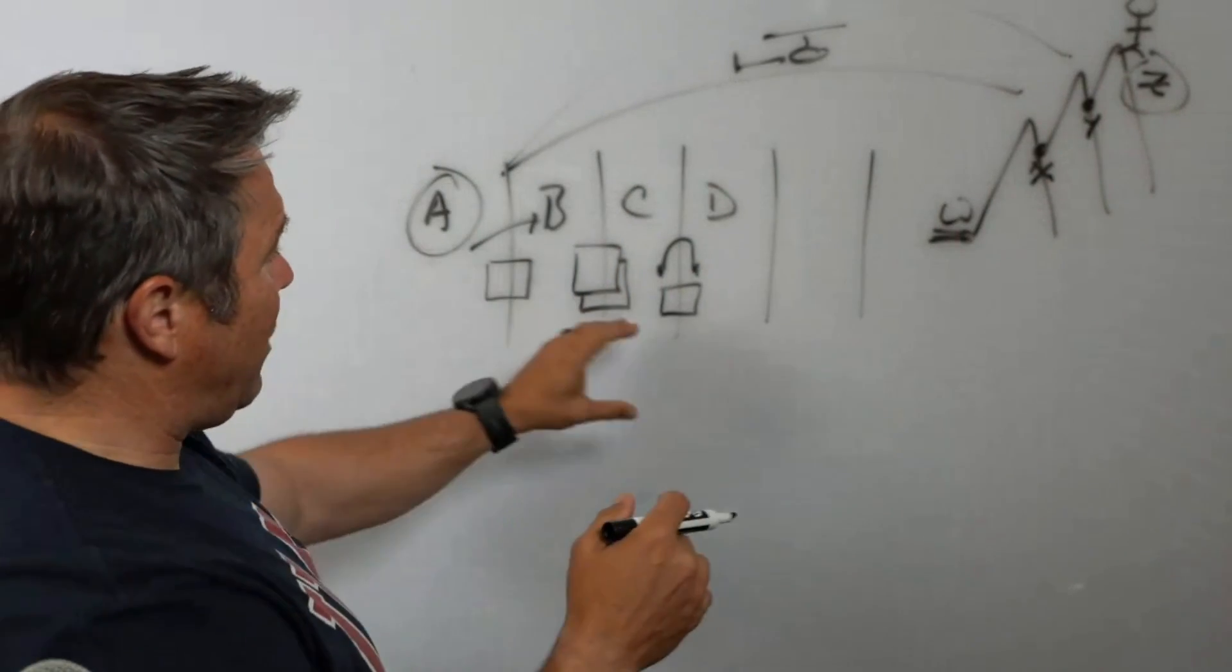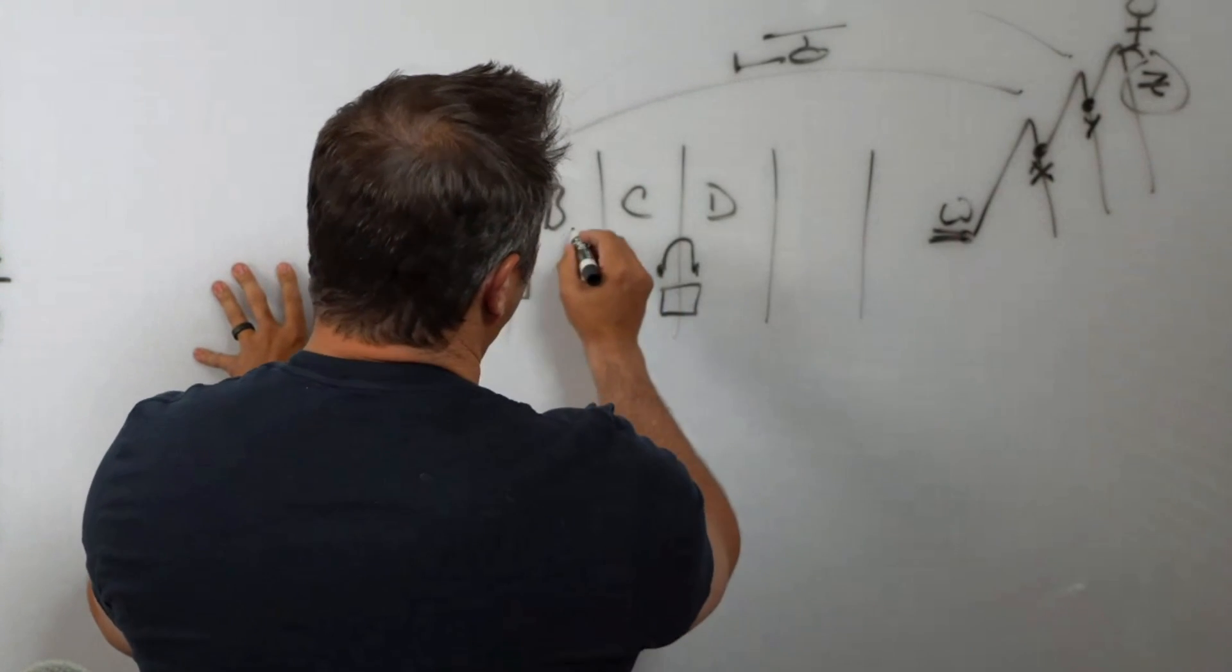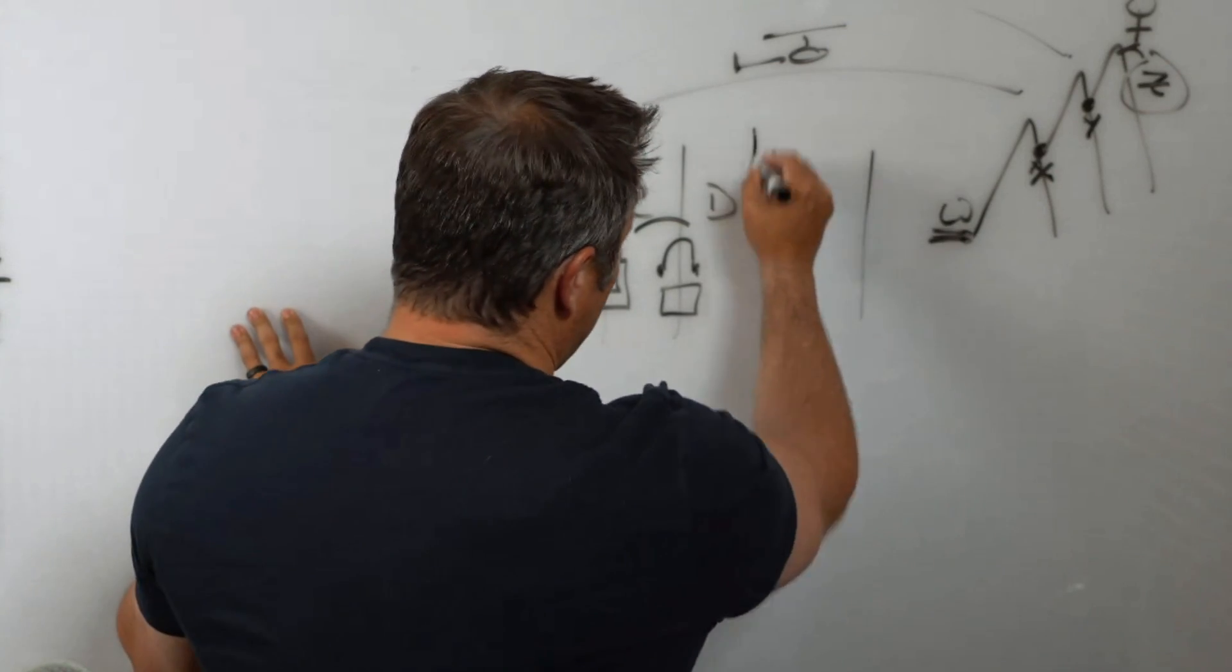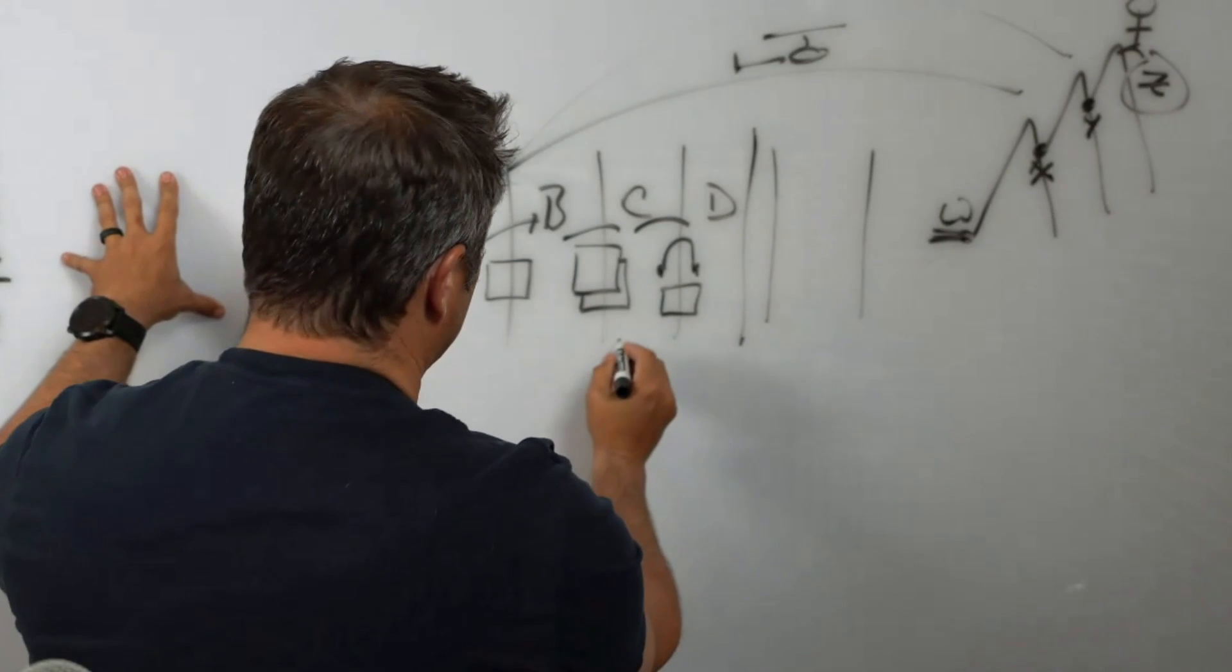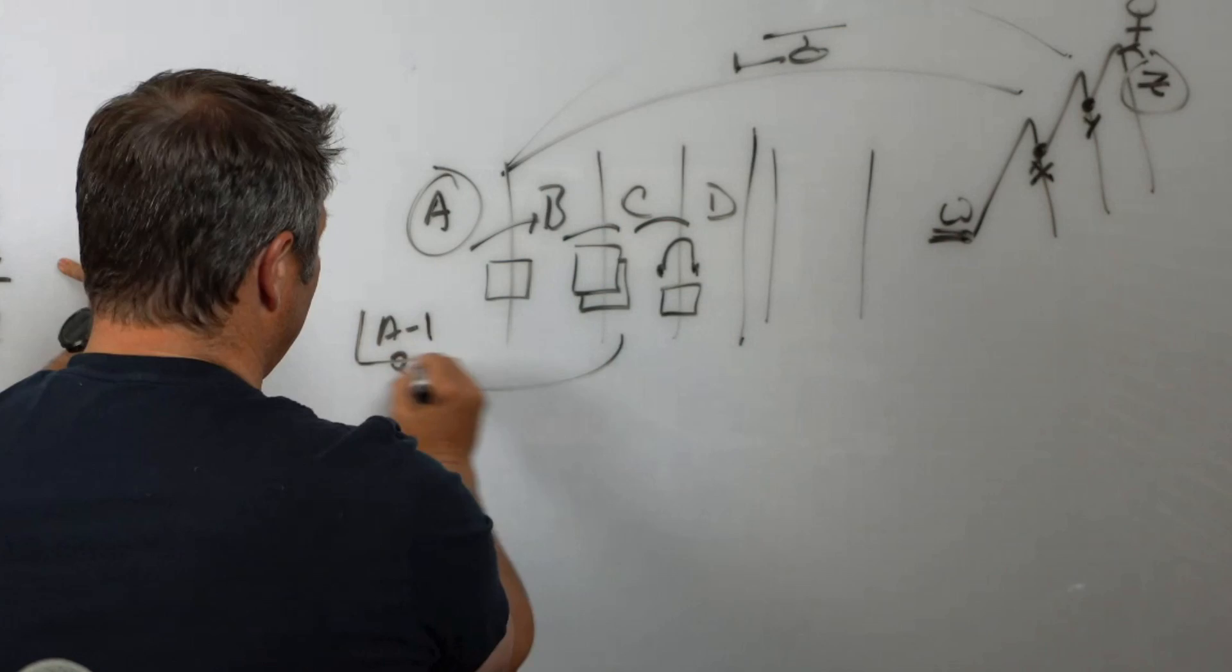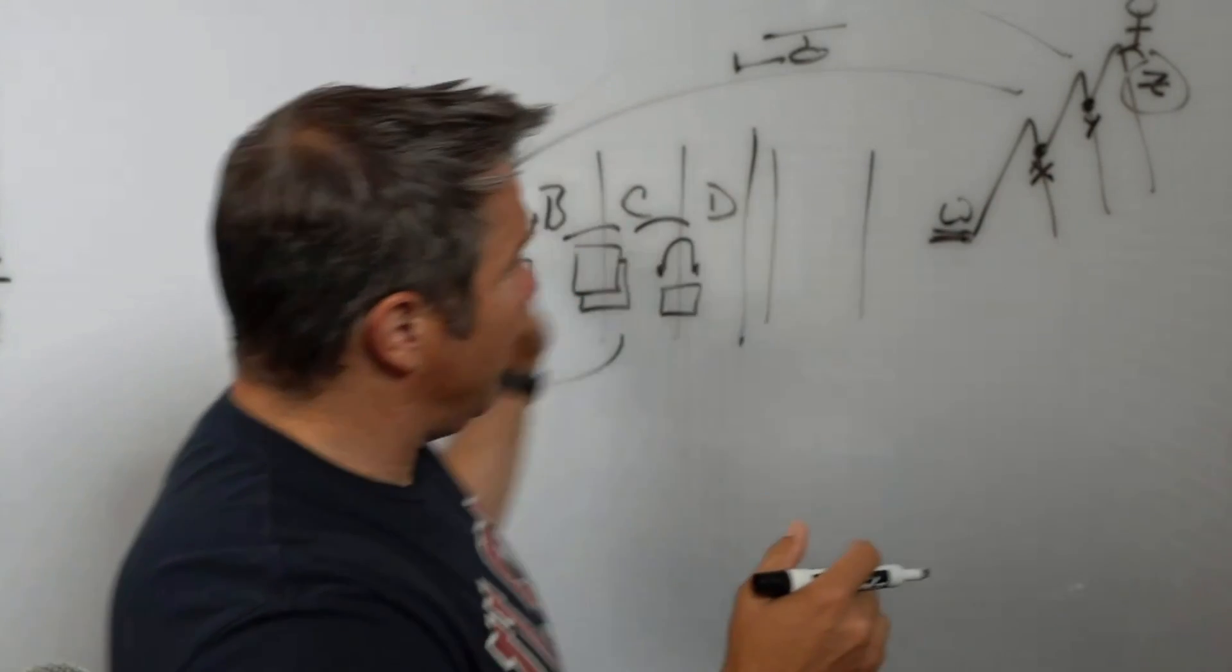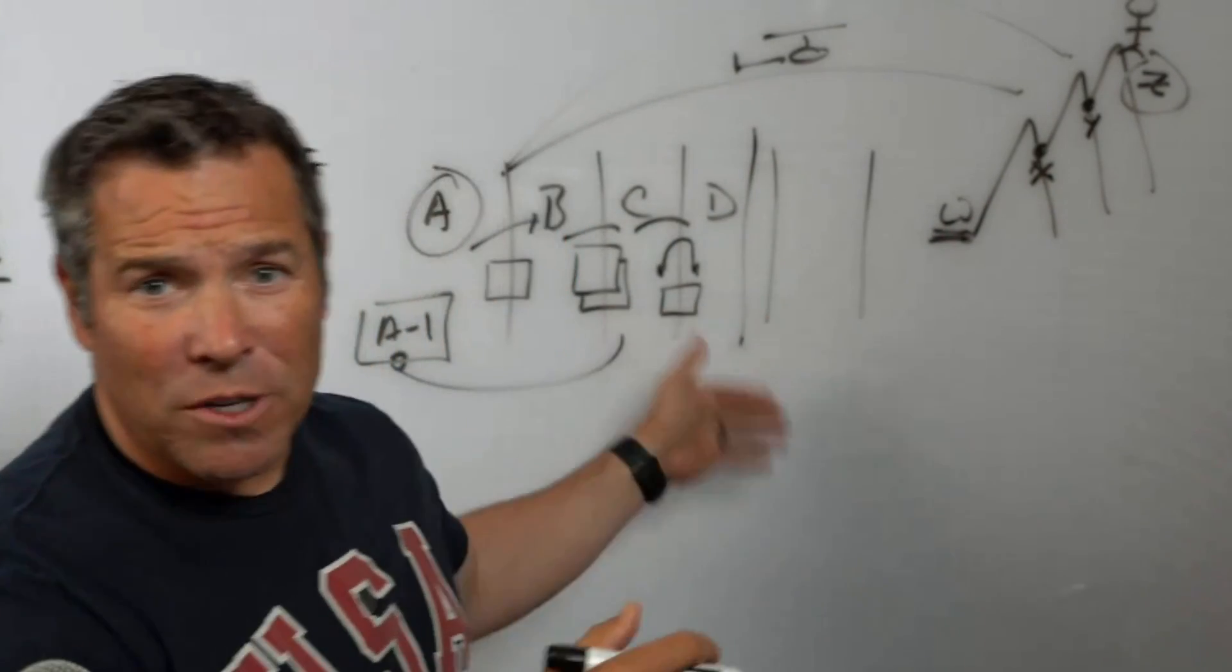As we get new information, we can start to determine, are we actually making progress toward the goal? Have we made it through B, C, and D? If so, we can keep moving forward. If for whatever reason we found ourselves in A minus one, we went backward because we started to go down the wrong path, now we can course correct and we can adjust. So let's design backward, execute forward, identify next logical steps, and then start taking those.